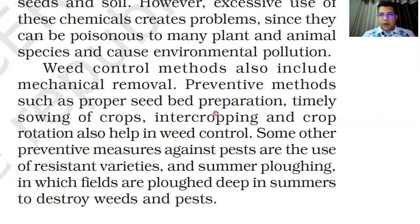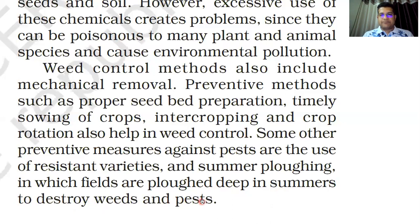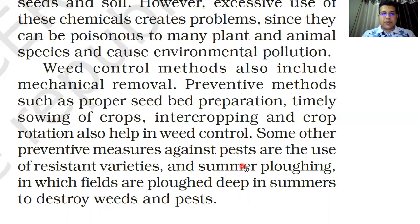Timely sowing of crops, intercropping and crop rotation also help in weed control. Other preventive measures against pests include the use of resistant varieties and summer plowing, in which fields are plowed deep in summers so that the heat destroys weeds and pests in the soil.